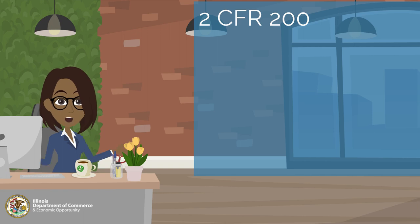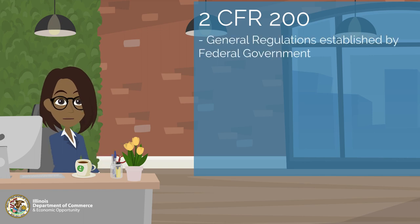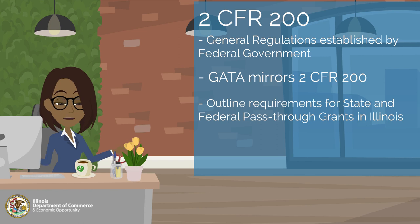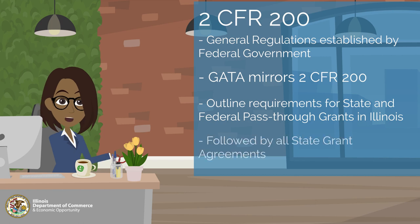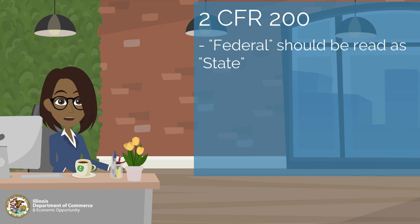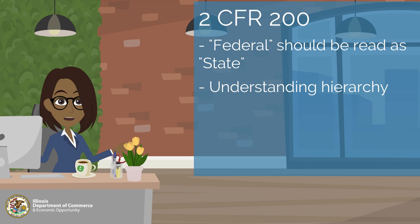2CFR 200 is a part of the general regulations set forth by the federal government. Illinois' Grant Accountability and Transparency Act, or GATA, mirrors the regulations found in 2CFR 200, making them synonymous. The purpose of 2CFR 200 and GATA is to outline administrative and grant requirements and cost principles for federal and State of Illinois grants. As such, all state grant agreements follow 2CFR 200. When reading 2CFR 200 for state and federal pass-through grants, the word 'federal' should be read as 'state' to help avoid confusion. Understanding the hierarchy and search options can greatly improve your navigational success.